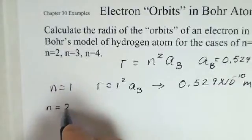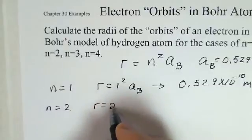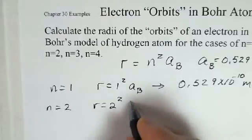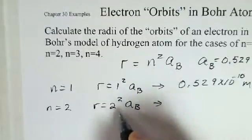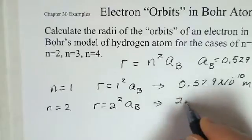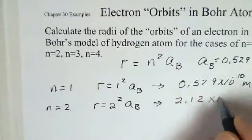What about n equals 2? Well, a little bit more complicated. We now have to put the integer 2 in here and square that times the Bohr radius. We're going to get a factor of 4 times the result we have up here, 2.12 times 10 to the minus 10.